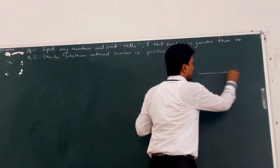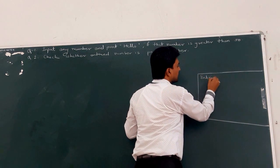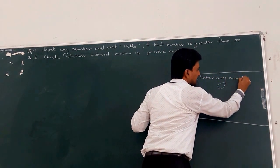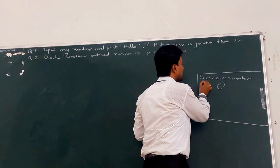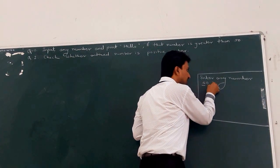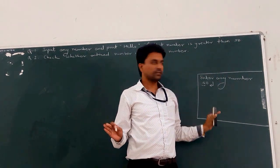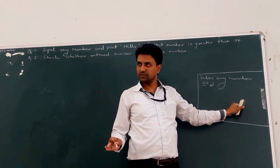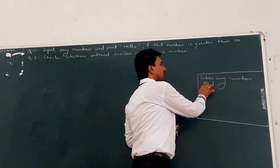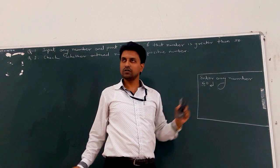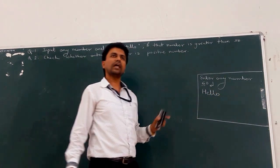The output displayed on the screen: in the console window, the first message is 'enter any number.' Then the cursor blinks for taking the number from the user. Suppose the user enters 40 and presses enter — 40 is less than 50, so there is no hello message on the screen. If the user enters 60 and presses enter, then the message 'hello' is printed on the console.